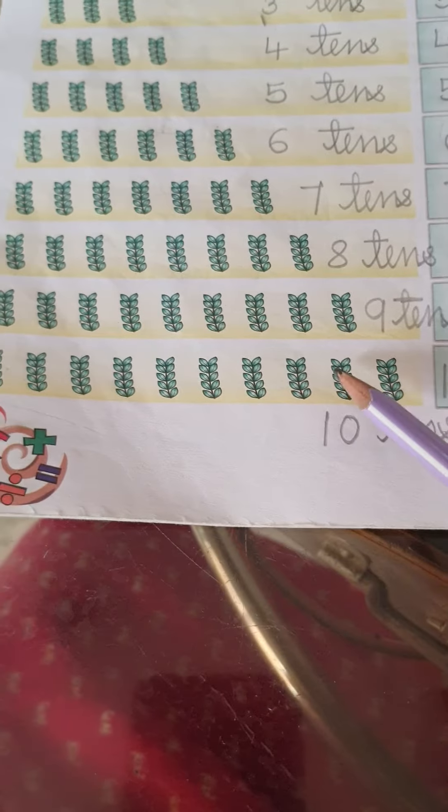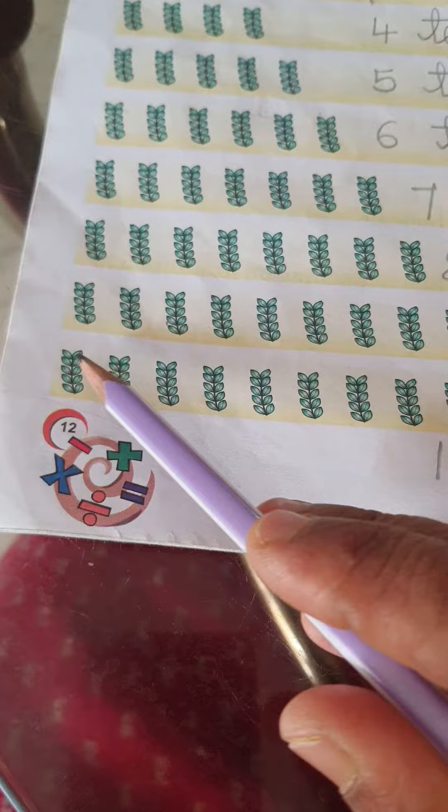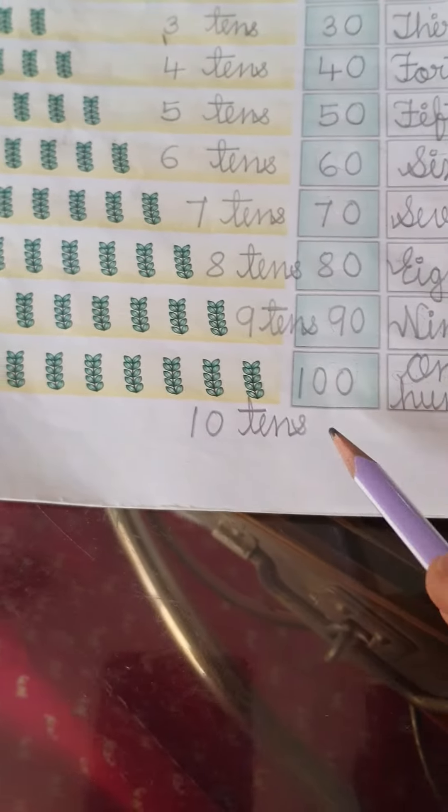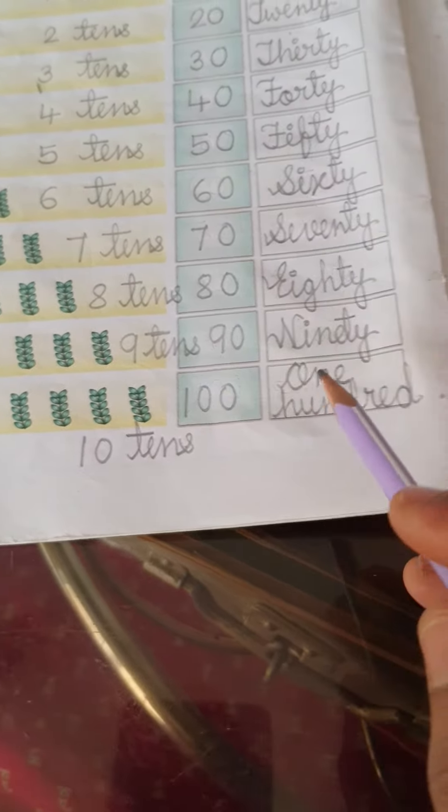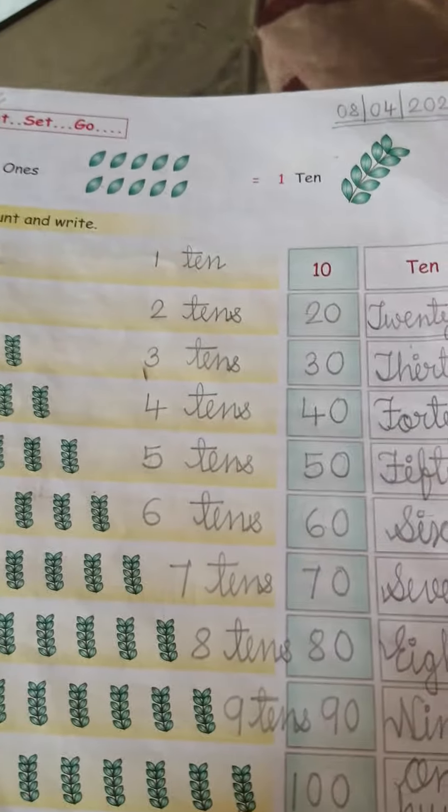3, 4, 5, 6, 7, 8, 9, 10. 10 tens. Means 100. Right here 100. Hare Krishna.